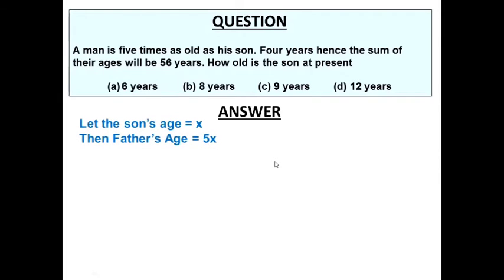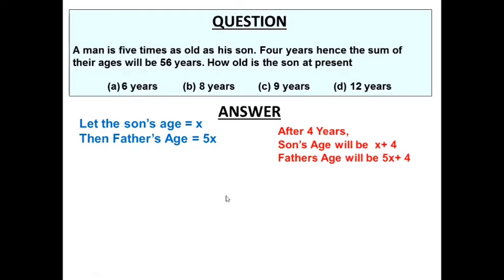Let the son's age be equal to x. So definitely the father's age will be 5x, because it is given that the man is five times as old as his son. Now, four years hence means after four years. So after four years, the son's age will be x plus 4, and the father's age will be 5x plus 4.